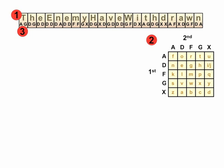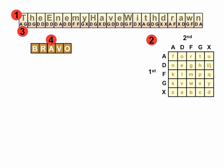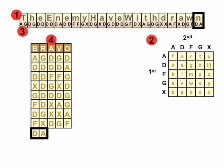A volunteer gives us the word Bravo. We're going to choose Bravo and put our enciphered letters across the grid. We start off with AG — T was enciphered to AG. Next is DG, then DD — that's the word THE. We continue: DD, DA, DD, and we end off with DA at the end, for N. We just keep wrapping around — once we finish a line, we start the next line.